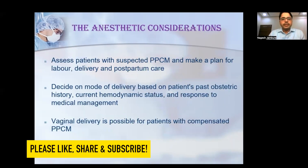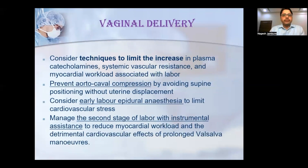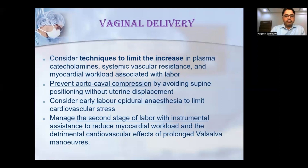For anesthesia consideration in patients suspected with peripartum cardiomyopathy, a plan must be made for labor, delivery, and postpartum care. The mode of delivery is decided based on obstetric history, hemodynamic status, and response to medical management, assessing for acidosis, hypoxia, or anemia. Vaginal delivery is possible in compensated peripartum cardiomyopathy. Cesarean section is required if the patient has decompensated heart failure or ejection fraction less than 25 to 30%. Vaginal delivery limits increase in plasma catecholamines, systemic vascular resistance, and myocardial workload. Aortocaval compression should be prevented, and early labor epidural anesthesia should be considered to limit cardiovascular stress. The second stage of labor should be managed with instrumental assistance to reduce myocardial workload and avoid prolonged Valsalva maneuver.